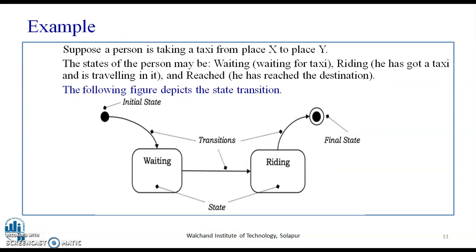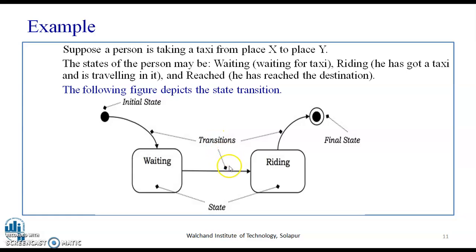Consider the example of a person taking a taxi from place X to place Y. The states of the person may be: waiting (waiting for the taxi), riding (traveling in it), and reached (arrived at the destination). The following figure depicts the state transition — waiting and riding are the two states, with the initial and final states shown by the defined symbols and transitions labeled accordingly.